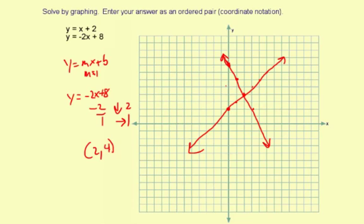Now when you're solving by graphing, you always want to double-check your answer in both equations to make sure it works. So I'll put in a 2 for x. 2 plus 2 equals 4, which is the y. That one works. Put in a 2 for x here. Negative 2 times 2 is negative 4. Negative 4 plus 8 is 4, which is what it should be. 2, 4 is the solution to the system.